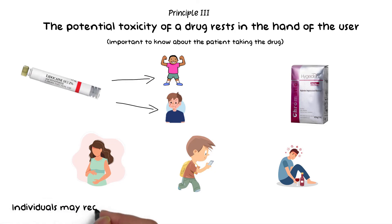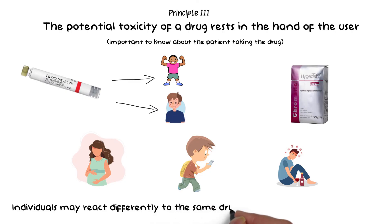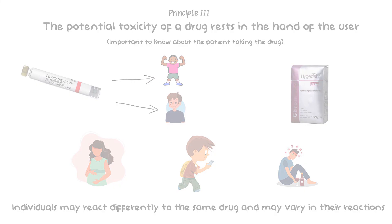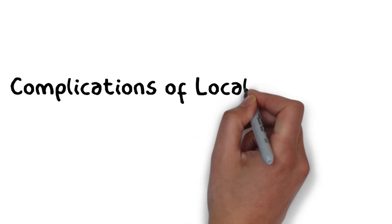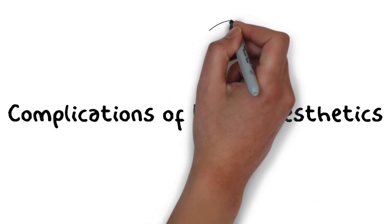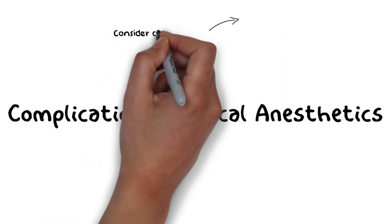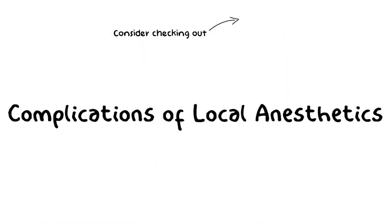In conclusion, individuals may react differently to the same drug and vary in their reactions. Before administering any drug or local anesthetic, the doctor must ask the patient specific questions about their medical or drug history, and probing hard during history taking can never be stressed enough. These basic principles are very important in order to minimize harmful effects while injecting a local anesthetic or using any drug, and one needs to understand them clearly before moving on.